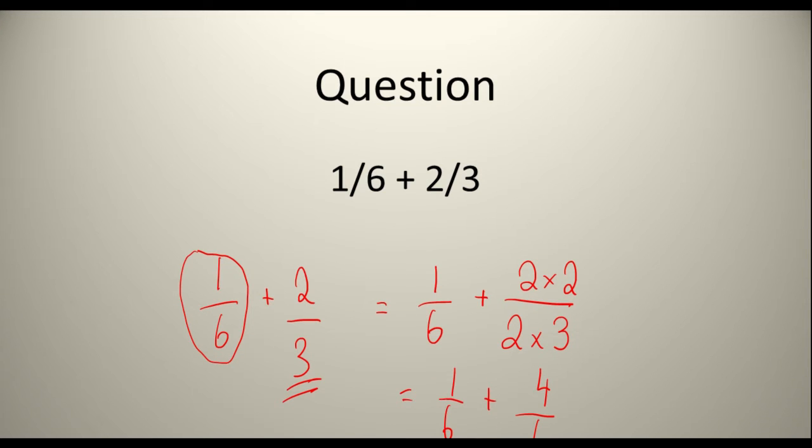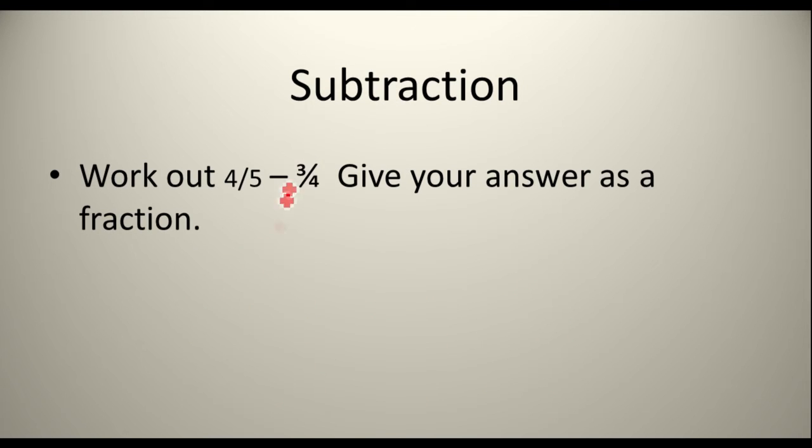If you've got that right, give yourself a pat on the back. So now we're going to be moving on to subtraction, which is slightly more difficult. But I'm sure you'll get it. So here it says, work out four fifths minus three quarters. Give your answer as a fraction. So we've got four over five minus three quarters.